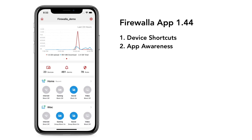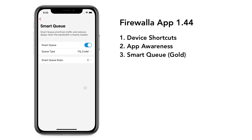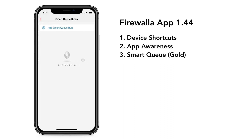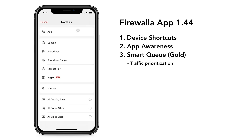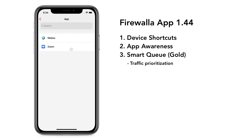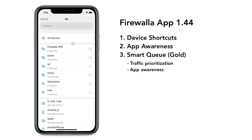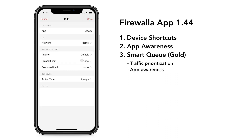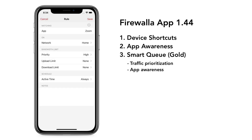If you own Firewall or Gold, you will see this app awareness in SmartQ management. For example, if you want to improve a Zoom meeting by making it a higher priority on the network, all you need to do is go to the SmartQ UI, create a new rule, select the Zoom app, set priority to high, with no upload and download limit.